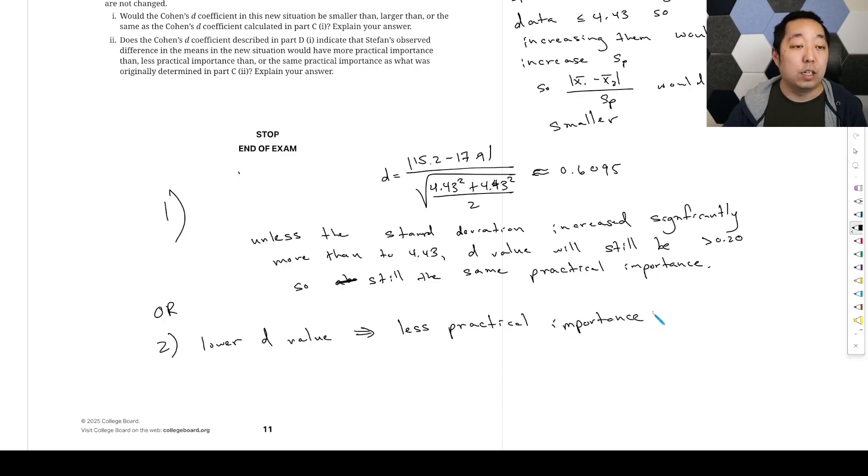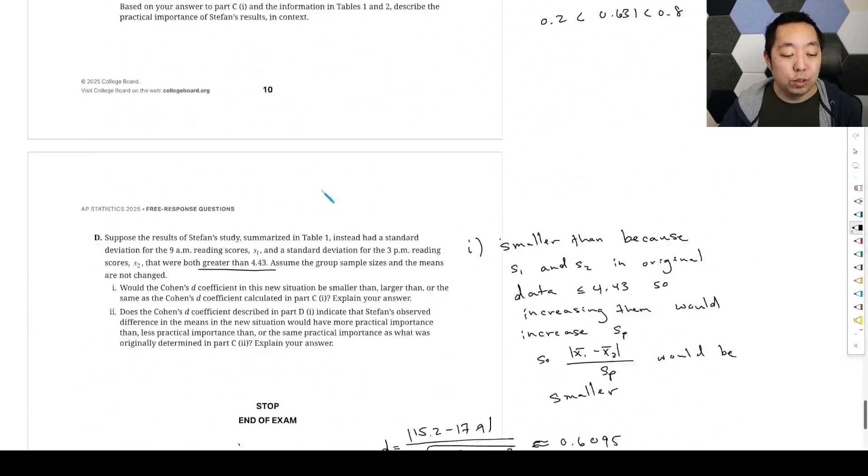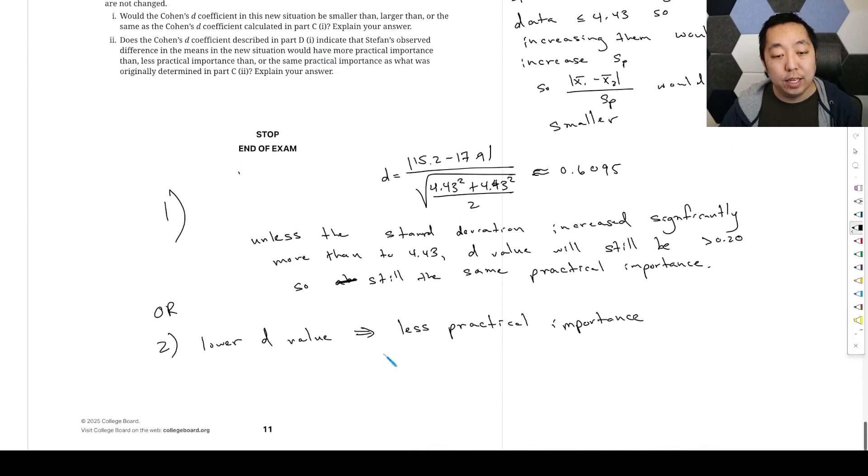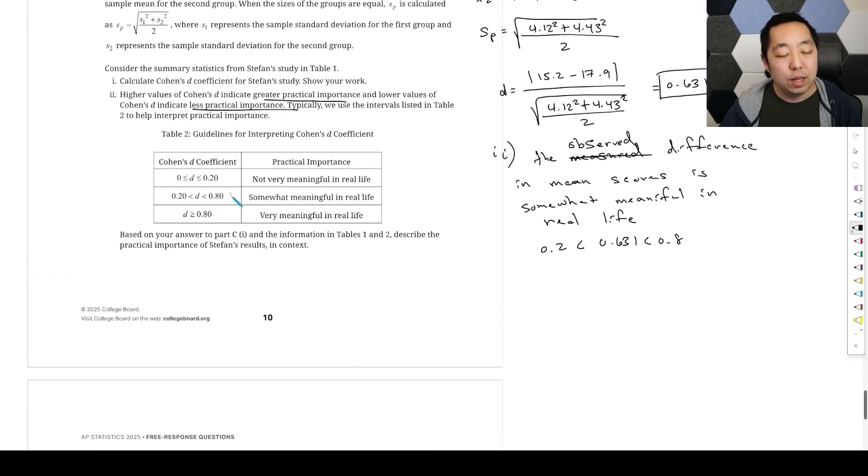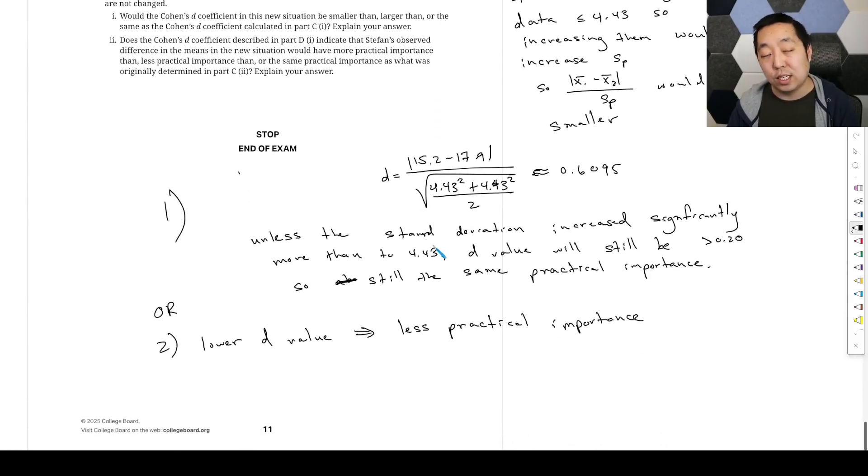All right, you can make that argument as well, because they do say in here higher values of Cohen's D indicate greater practical importance, and lower values less practical importance. So because it did go down, it is less practical importance. It's probably they wanted an answer like that, but I was basing it off of the table. Honestly, I bet either way, as long as you were just kind of clear how you explained that, I think it would be fair.